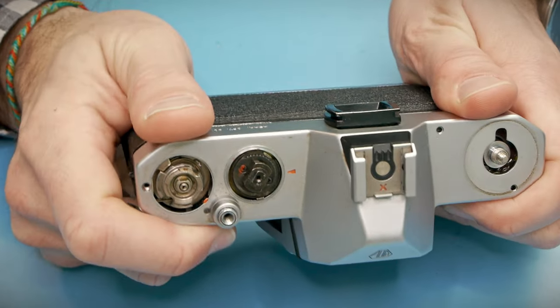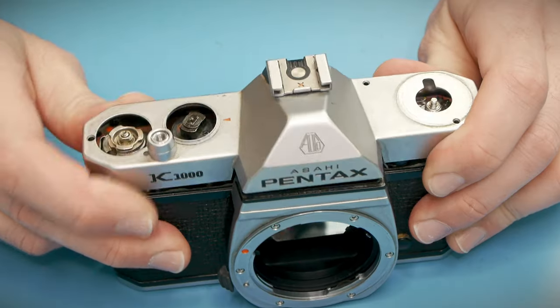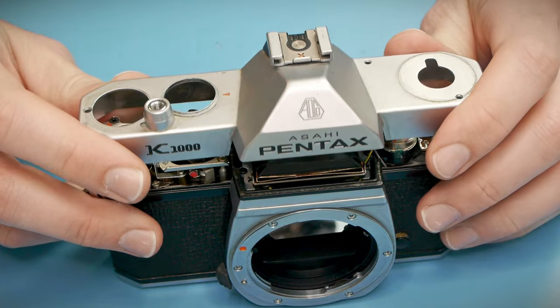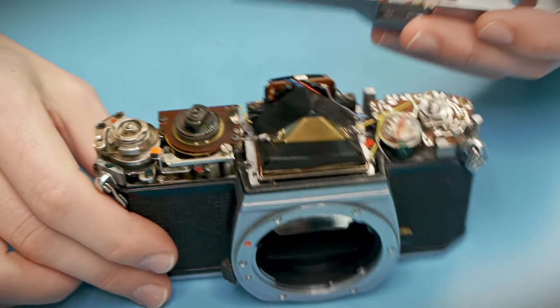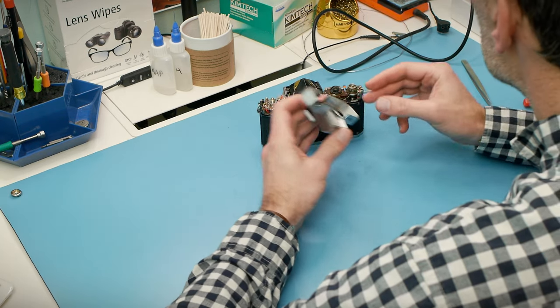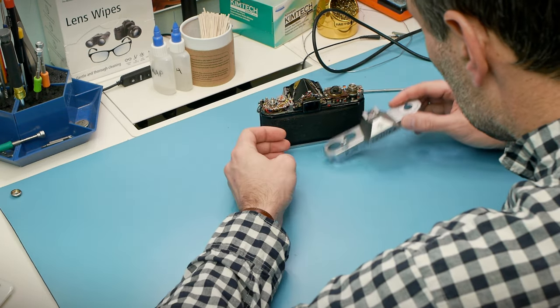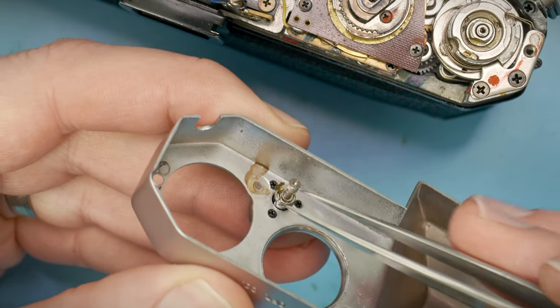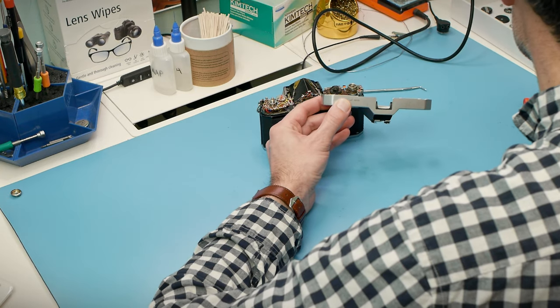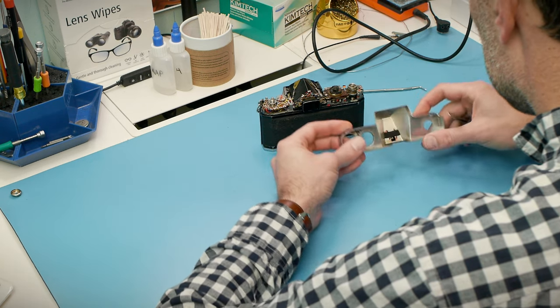This one is pretty stiff, must be clamping on the chassis a little bit. There we go. I'm trying to tap out the little pin on the underside of the shutter button. It's loose and sometimes it just falls out on its own. This one I'm going to have to grab with some tweezers.